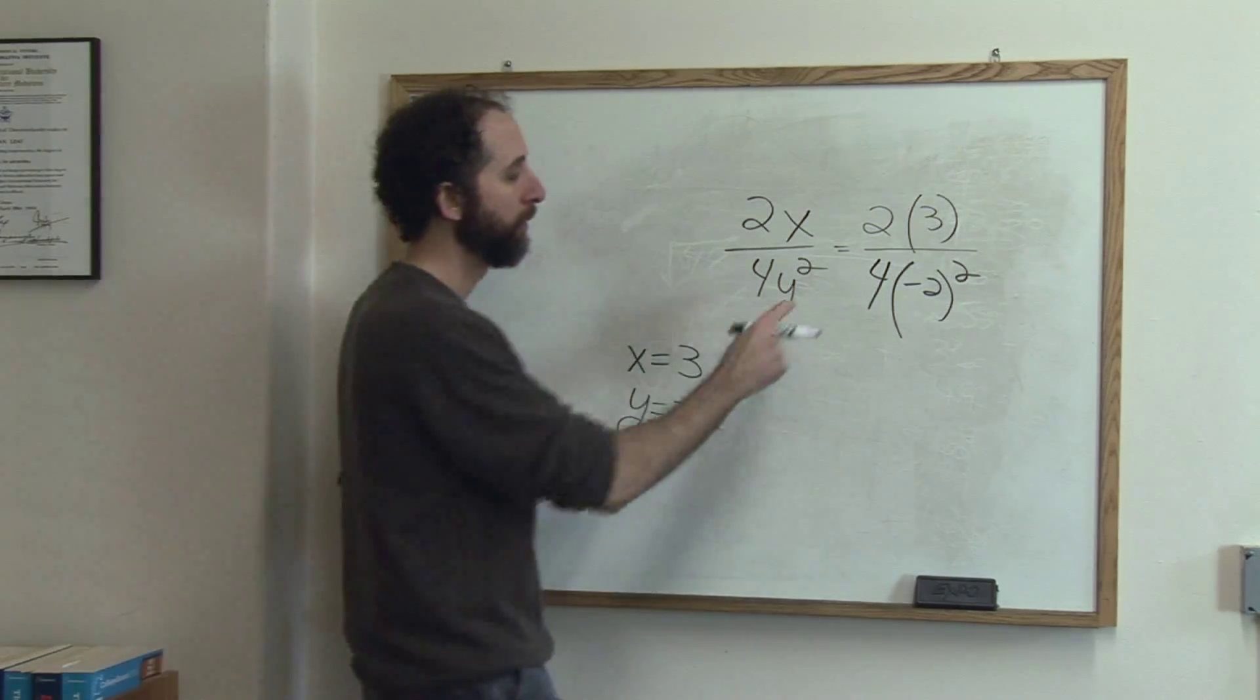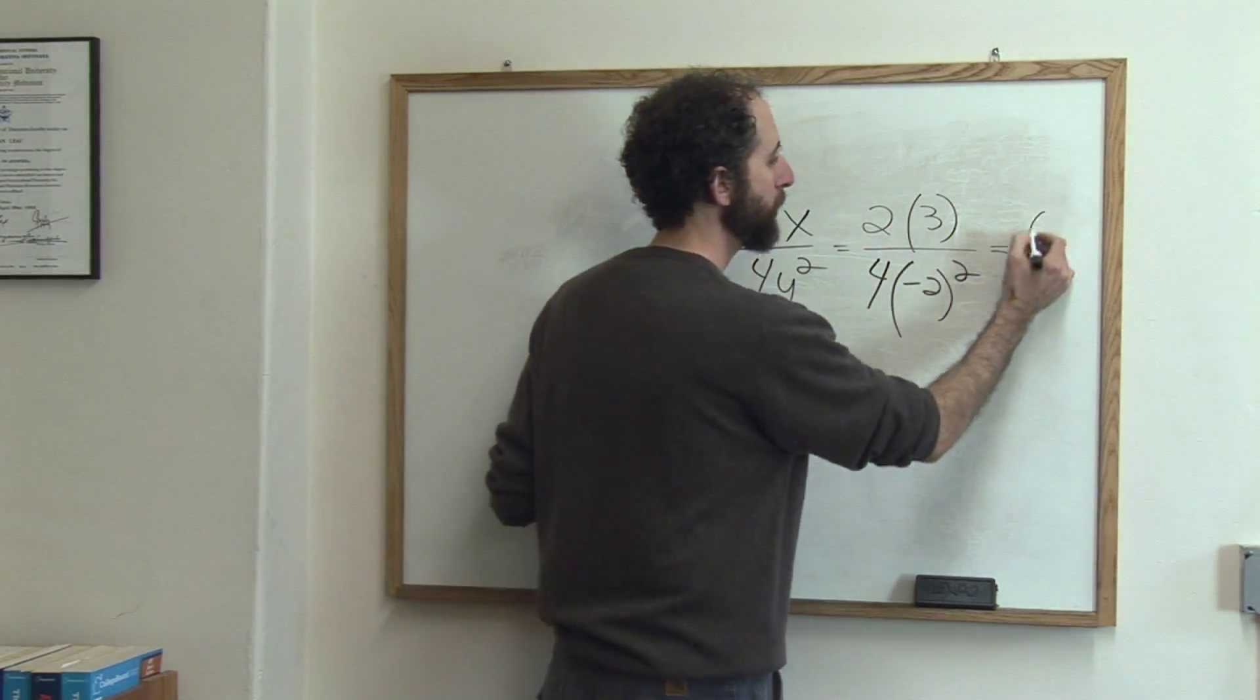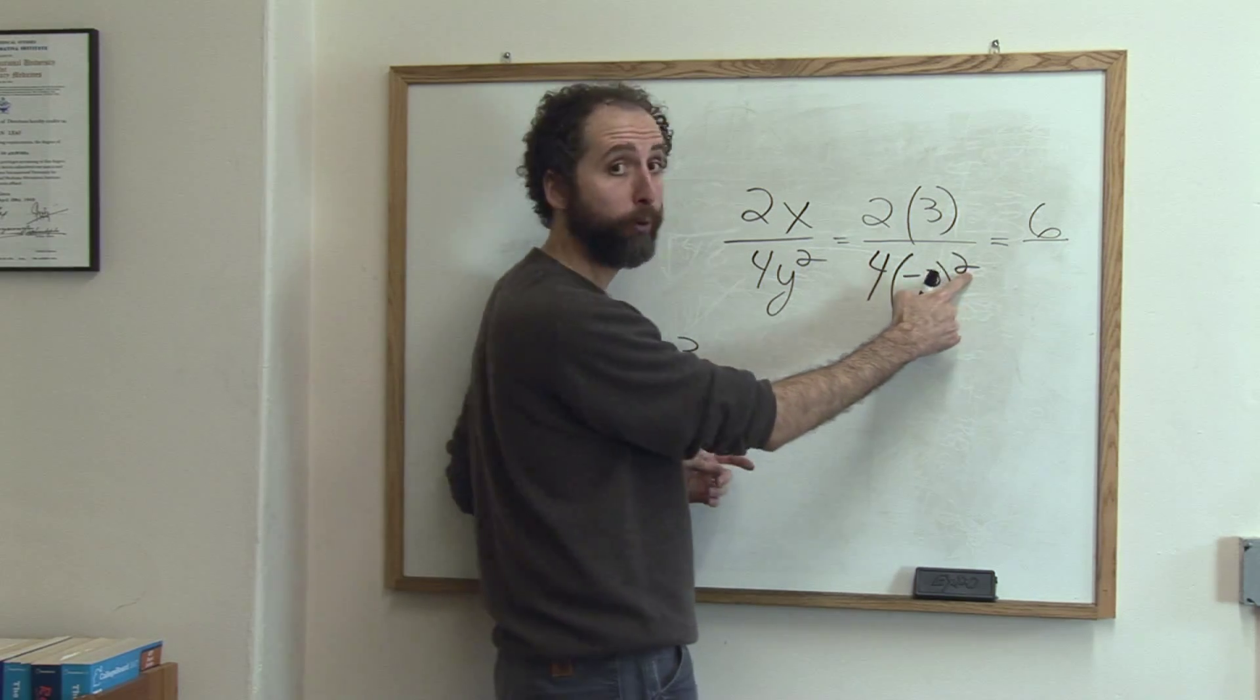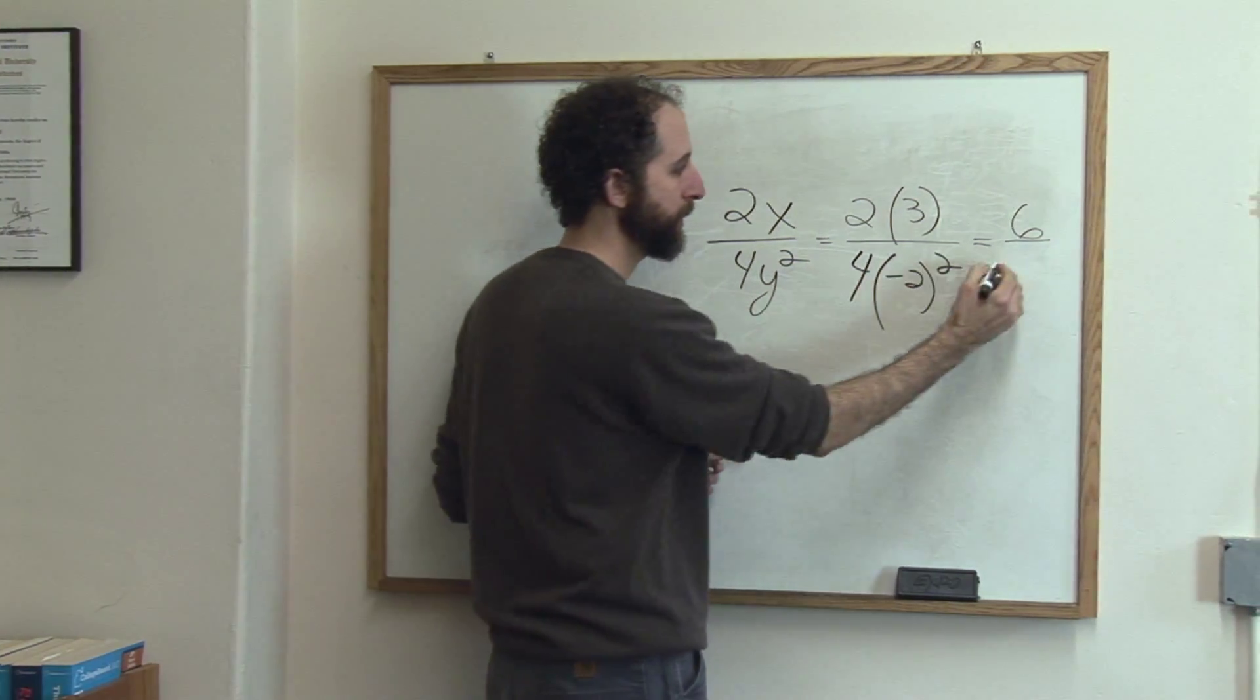I will now simplify it. 2 times 3 is 6. Negative 2 squared is 4. 4 times 4 is 16.